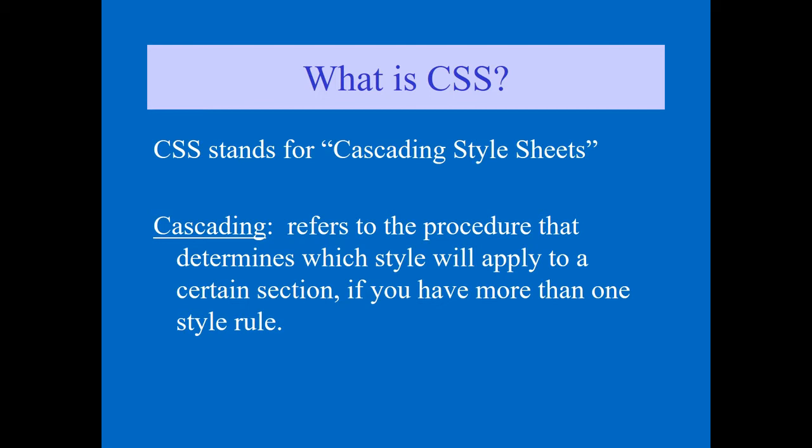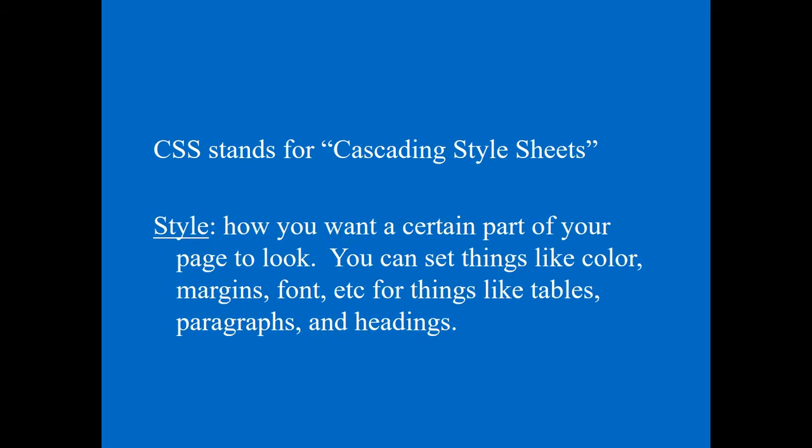First, let's see what is the meaning of 'cascading.' Cascading refers to the procedure that determines which style will apply to certain sections if you have more than one style rule. So it is a kind of procedure that determines which style will apply to a certain section.